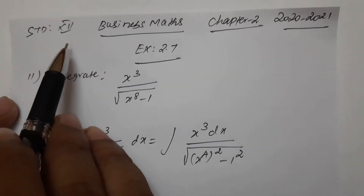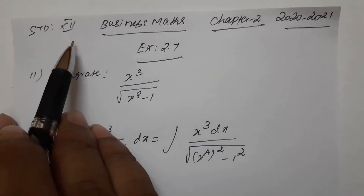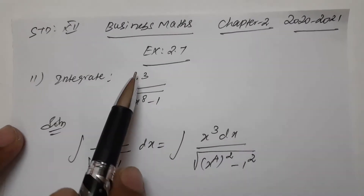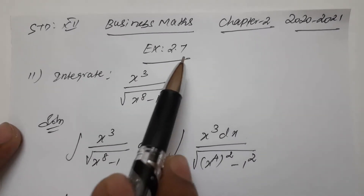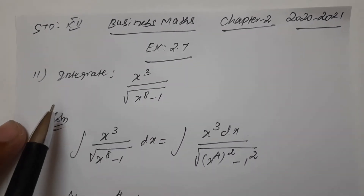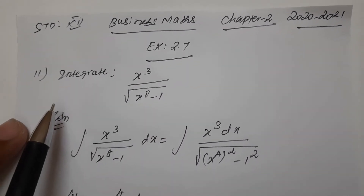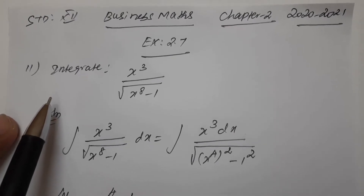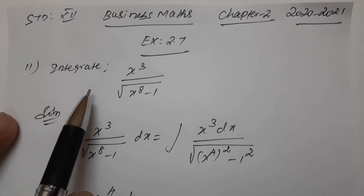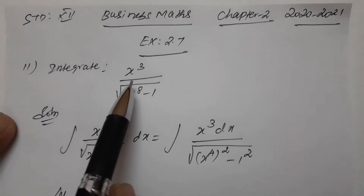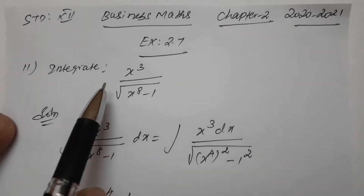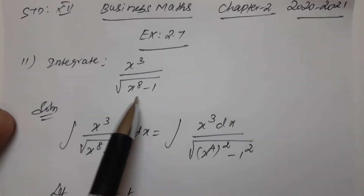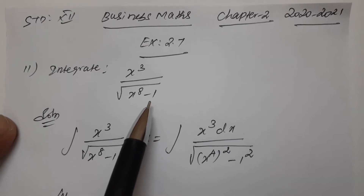Hi students, 12th standard business math, chapter 2, exercise 2.7. From the last class we completed the 10th sum. Now for the 11th sum: integrate x cube divided by square root of x power 8 minus 1.